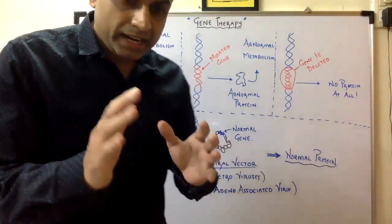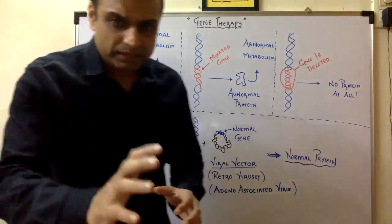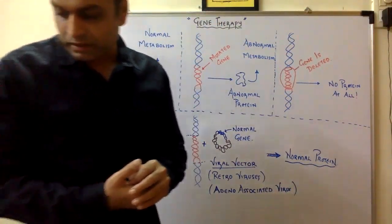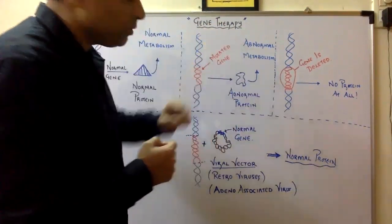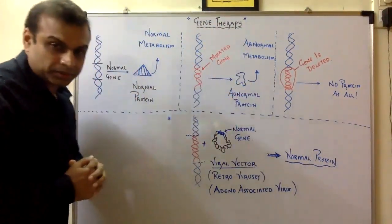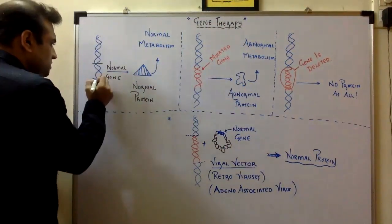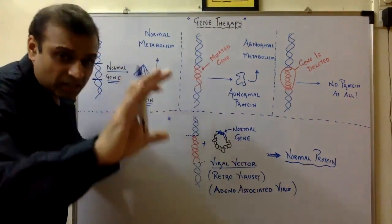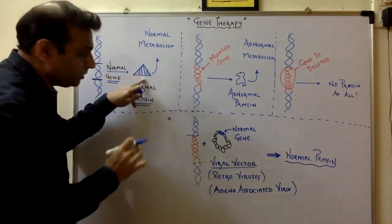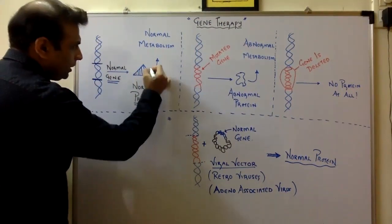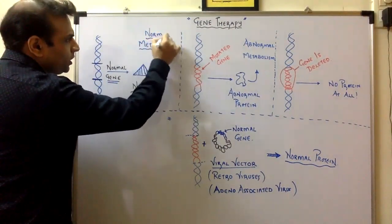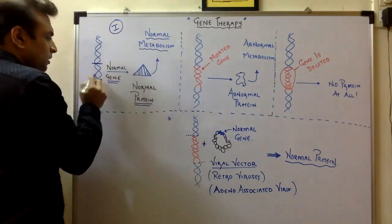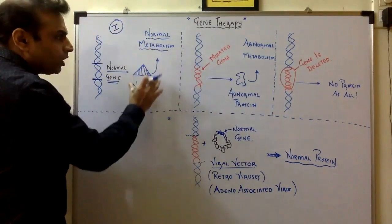Taking the chapter forward, the second application of biotechnology in the field of medicine is gene therapy. To understand what gene therapy is, let us consider three cases. Consider this is a DNA with a normal gene producing a normal protein — let's say the protein is shaped like a triangle. This triangular protein plays a very important role in normal metabolism. This is case 1: normal gene → normal protein → normal metabolism.